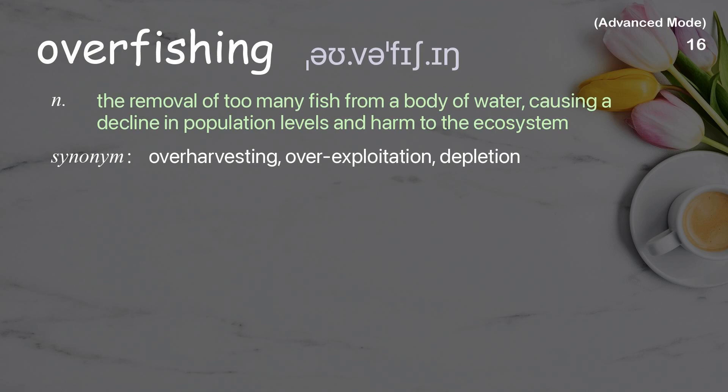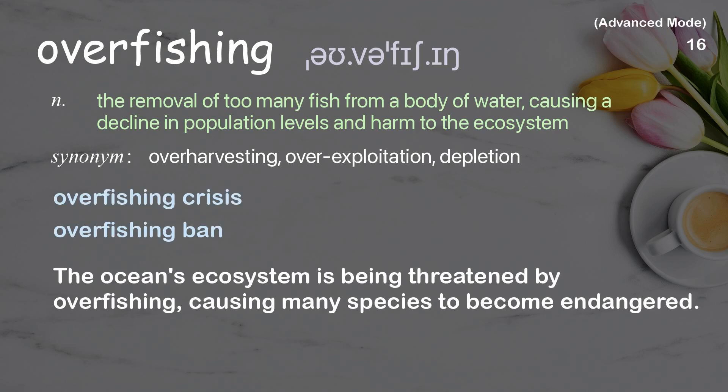Overfishing: the removal of too many fish from a body of water, causing a decline in population levels and harm to the ecosystem. Examples: overfishing crisis; overfishing ban. The ocean's ecosystem is being threatened by overfishing, causing many species to become endangered.